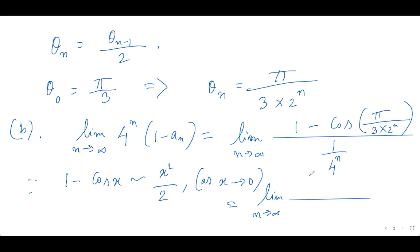So this is coming out to be pi square by 9 times 4 to the power n divided by 2. So that means 18 times 4 to the power n divided by 1 by 4 to the power n.